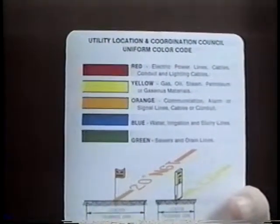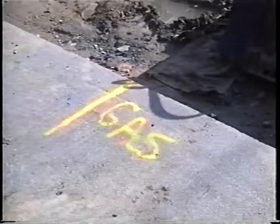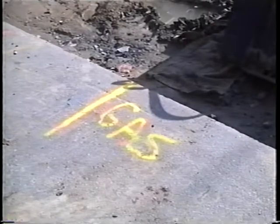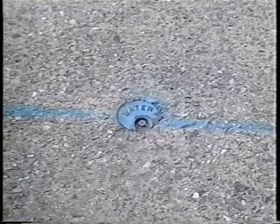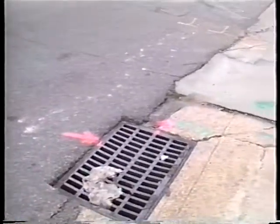Red is for electric power lines, cables, conduit, and lighting cables. Yellow for gas, oil, steam, petroleum, or gaseous materials. Orange for communication, alarm, or signal lines, cables, or conduit. Blue for water, irrigation, and slurry lines. And green for sewers and drain lines. Where several facilities lie close together, using the color code makes markings distinguishable and understandable to all.